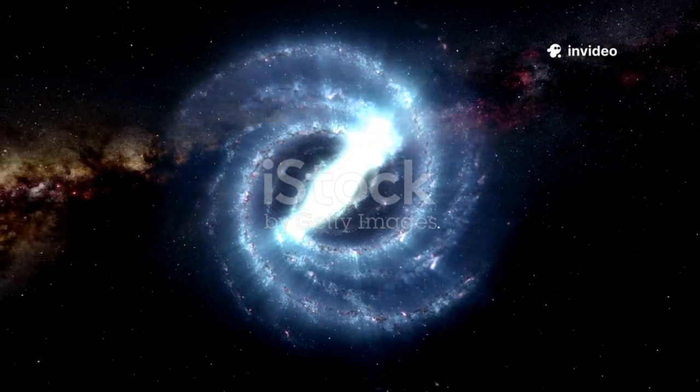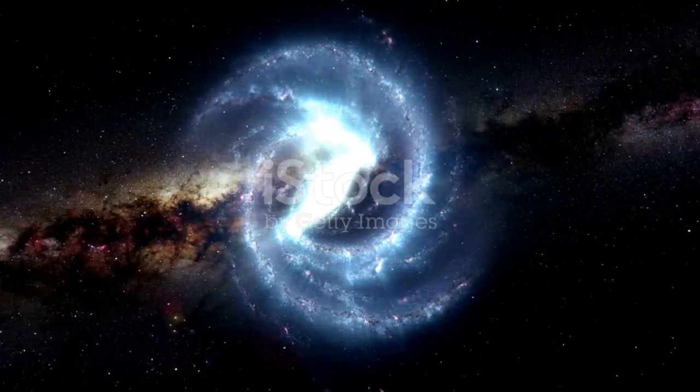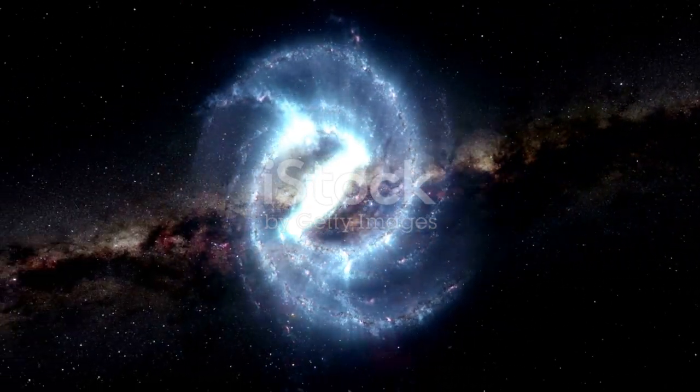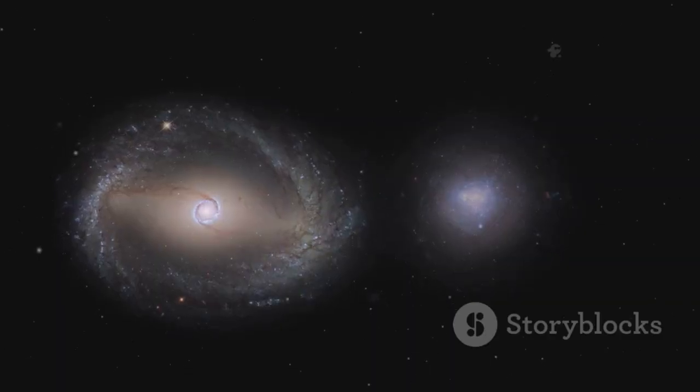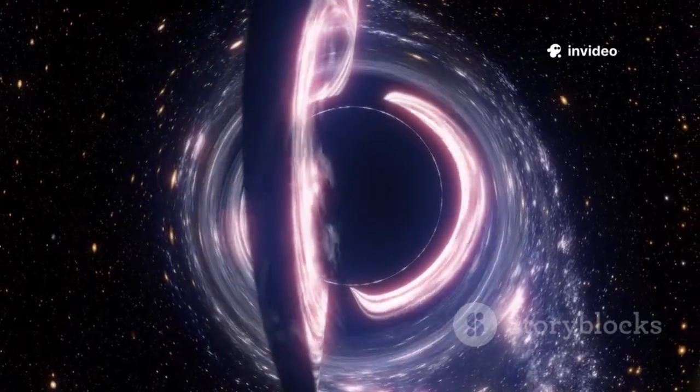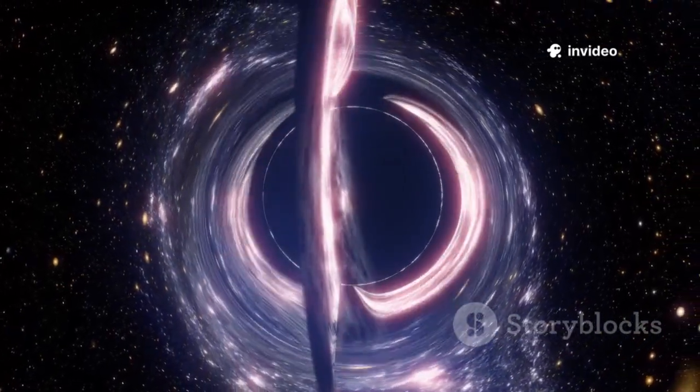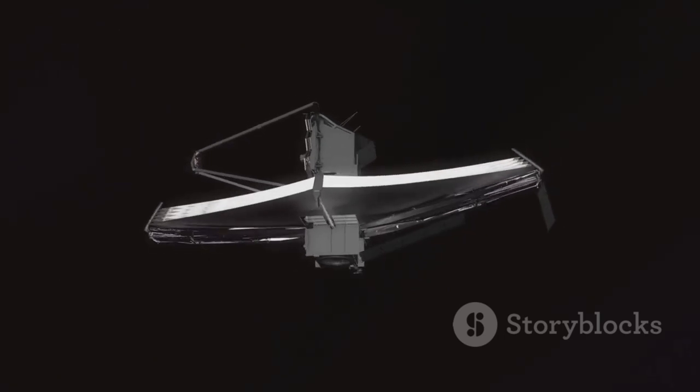Imagine a universe where most galaxies spin the same way. The James Webb Space Telescope has revealed that ancient galaxies formed after the Big Bang predominantly spin in one direction. This challenges long-held models predicting random spin. Some now wonder, could our universe exist within a black hole? The JWST's discovery is just the beginning, inviting us to explore the universe's deepest mysteries.